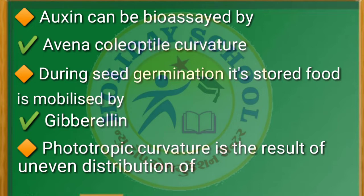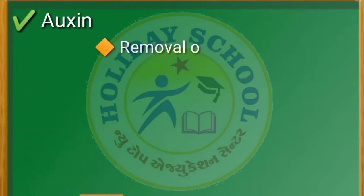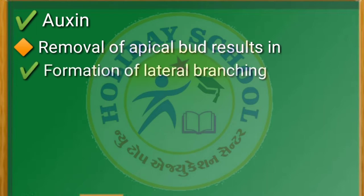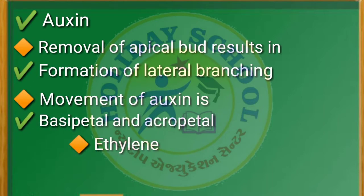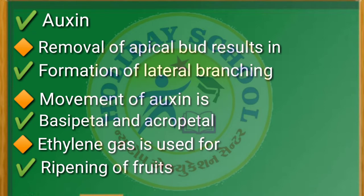Next question: during seed germination its stored food is mobilized by — gibberellin. Next question: phototropic curvature is the result of uneven distribution of — the answer is auxin.